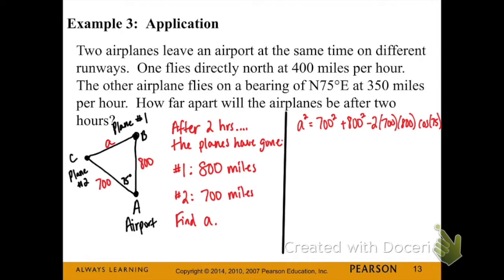In order to find side A I'm using the first of the three formulas for law of cosine since it starts with A squared and I've plugged in everything that I know.